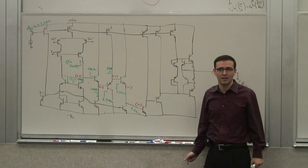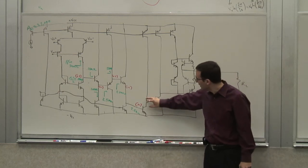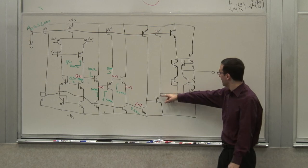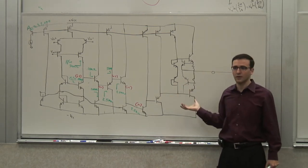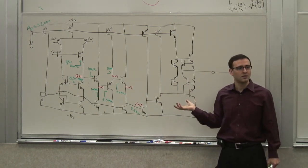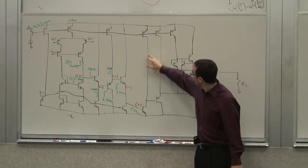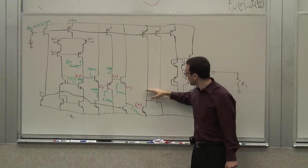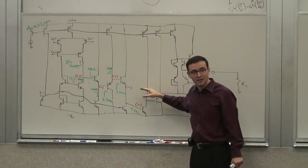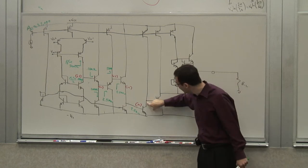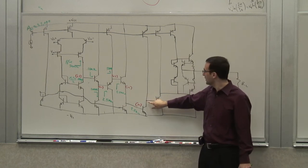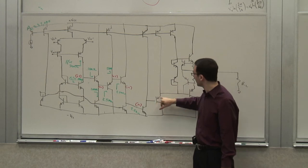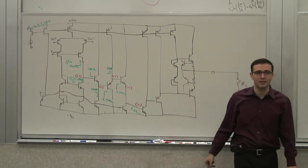I didn't tell you that. If I make this into a cascode, the output swing on this node is limited. From this point on I have some followers — just a few fancy followers. So if I make this cascode and make that cascode, the output swing here would be limited, therefore my op-amp output swing would be limited. And it would be reduced further by the VBE drops it has to tolerate.